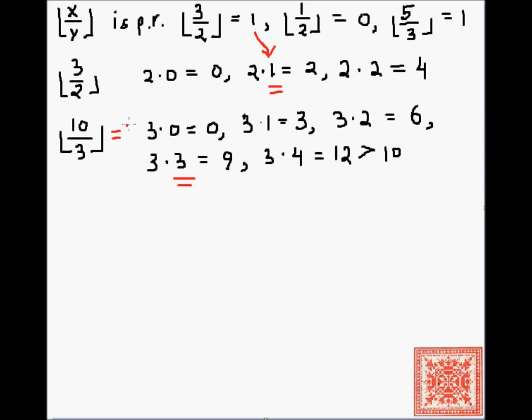Just for clarity, this is equal to 3, the floor of 10 over 3. And this is equal to 1. So we keep on increasing the number until we go above 10. And then the previous number is the number by which we multiply the denominator. And the previous number is our answer.